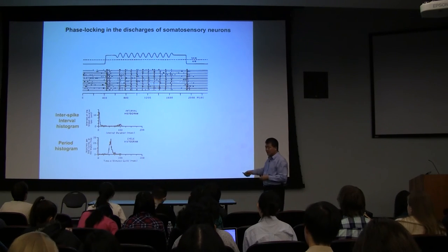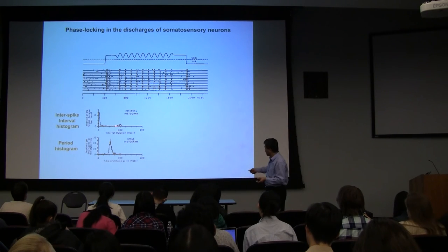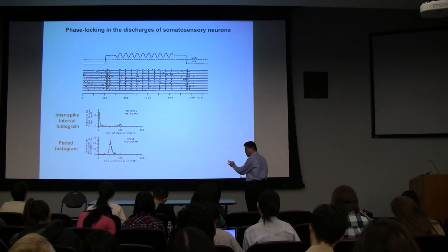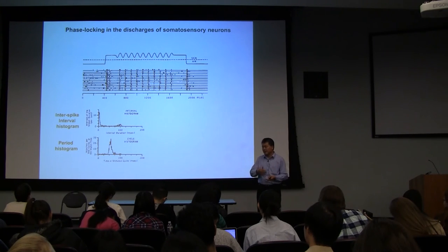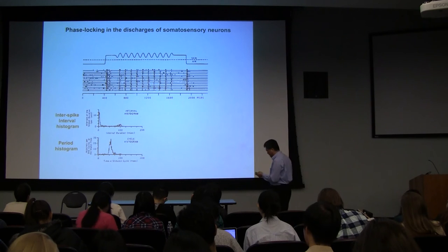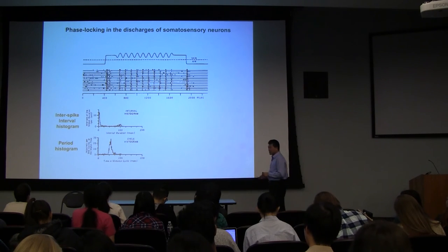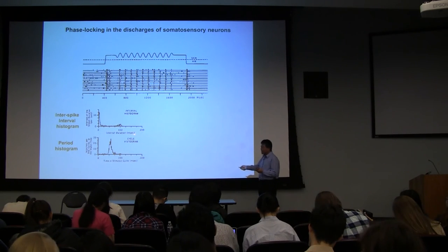The interspike interval histogram is the most accurate description of the spike train. What I expect you to know is: if I show you an interval histogram, you'll be able to tell the general pattern of the spike train, and vice versa. Then after all four levels of analysis, we can see this contains the most information on the spike train.